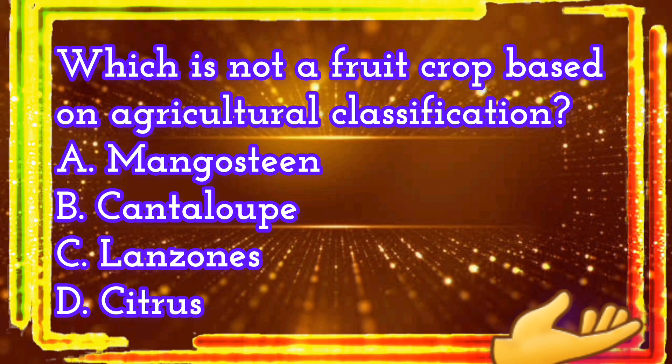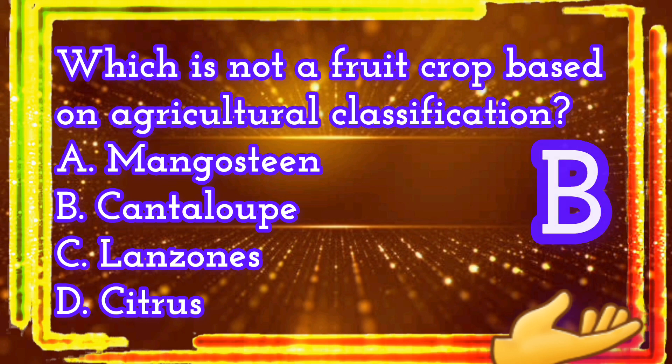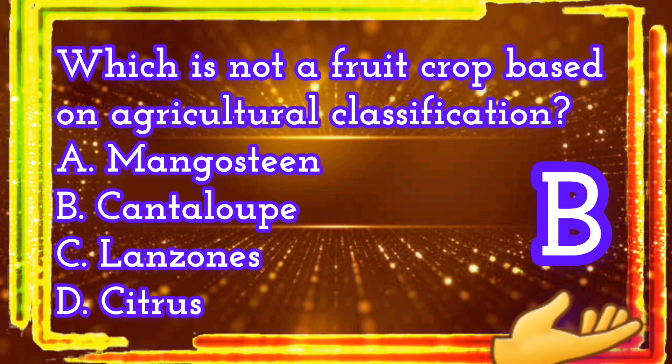Which is not a fruit crop based on agricultural classification? A. Mangosteen. B. Cantaloupe. C. Lanzones. D. Citrus. The correct answer is letter B. Cantaloupe.